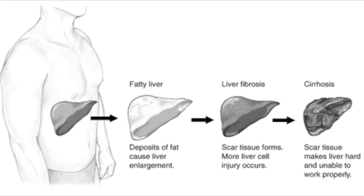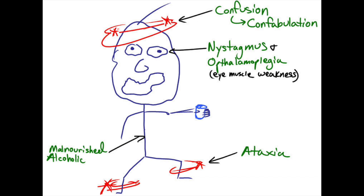Neomycin and rifaxamine are antibiotics that decrease ammonia-producing flora in the gut. When you suspect Wernicke's encephalopathy, low thiamine levels are the problem. The first-line treatment is thiamine 100 mg first, and then give dextrose. Thiamine helps brain cells produce energy from sugar. These patients need to be admitted for continued care and monitoring.